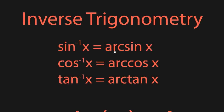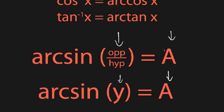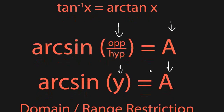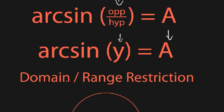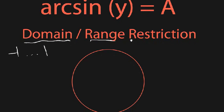Let's talk about inverse trigonometric functions, often written as sine with a negative 1 exponent, or arc sine. For these, the input is now the y coordinate or the ratio of opposite to hypotenuse, and the output is the angle — the reverse of the original sine function. The domain has to be between negative 1 and 1, because these inputs are just the outputs of the sine function, and sine only goes between negative 1 and 1.